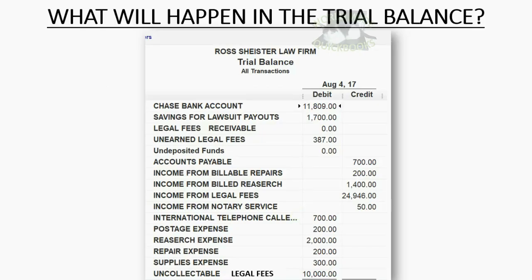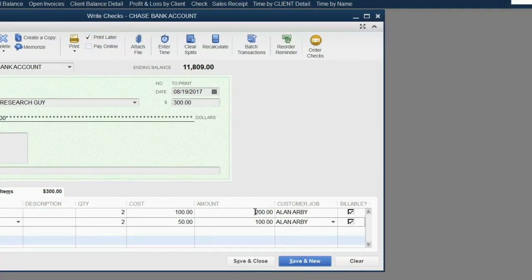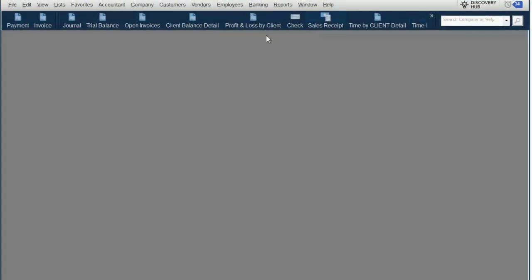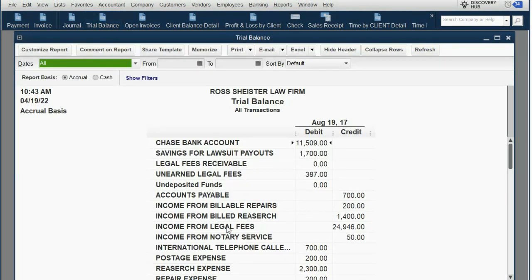What will happen in the trial balance at the moment we save this? Research Expense just increased by $300, so as soon as we save this check, Research Expense will increase to $2,300. And because the money came out of Cash and Bank, that account will decrease by $300 and become $11,509. We click Save and Close and then open the trial balance. Research Expense increased to $2,300 just as expected, and Cash and Bank decreased to $11,509.